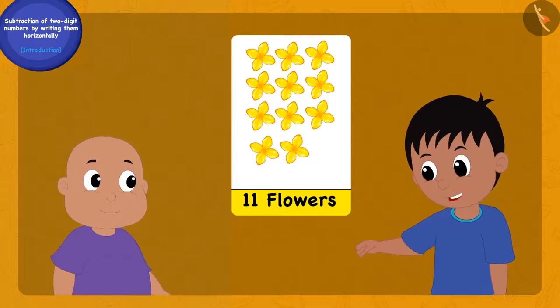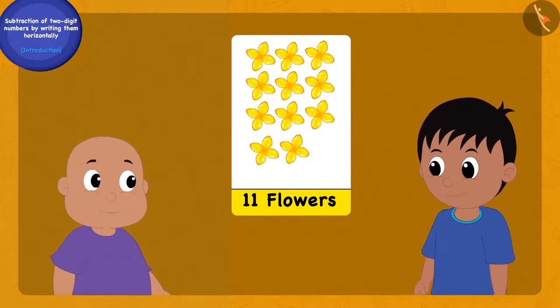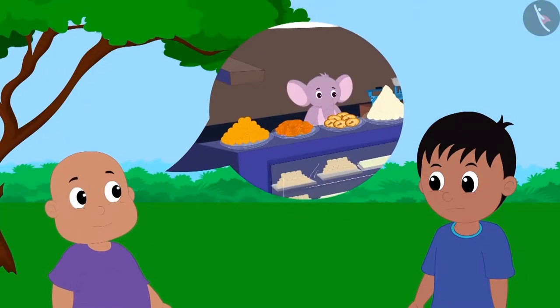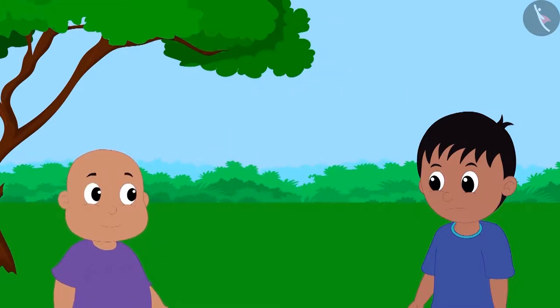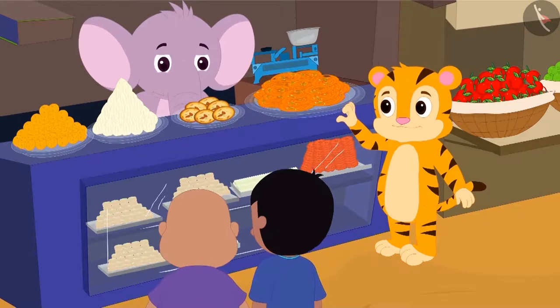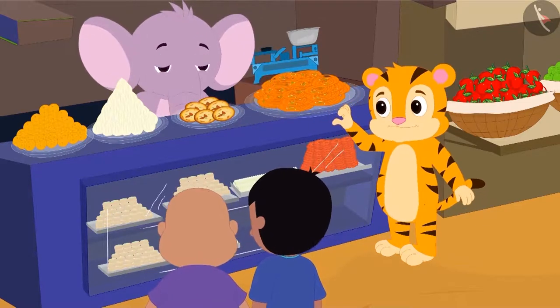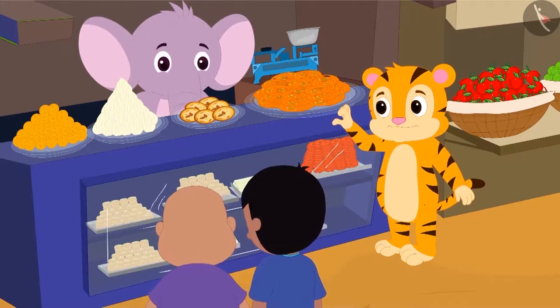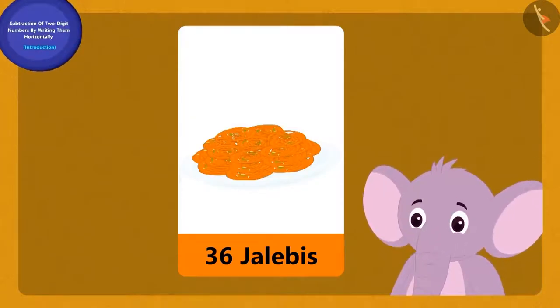Raju still could not understand clearly. 'Can you explain that to me with another example?' Raju said to Bablu. 'Let's go to Appu's sweet shop — I will give you another example there.'